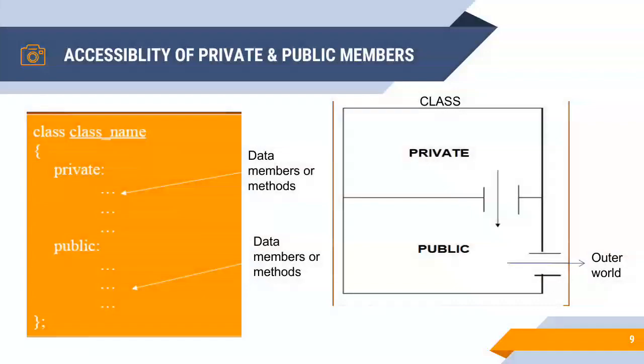Accessibility of private and public members. You can understand it by a diagram. In the diagram we show that private members can be accessed only inside the class in which they are declared. Public methods can access the private members and public members can be accessed by the outer world.